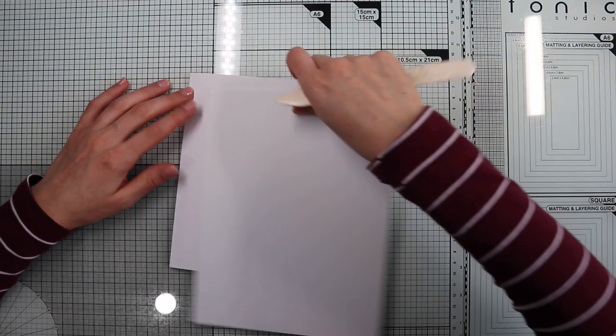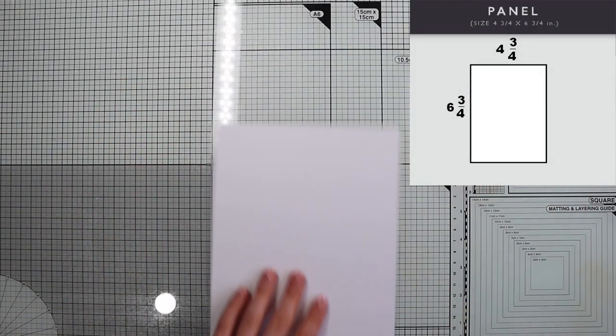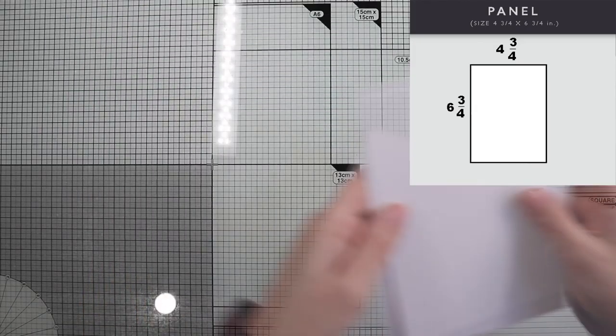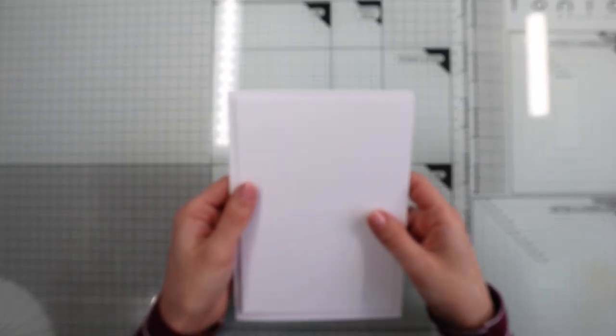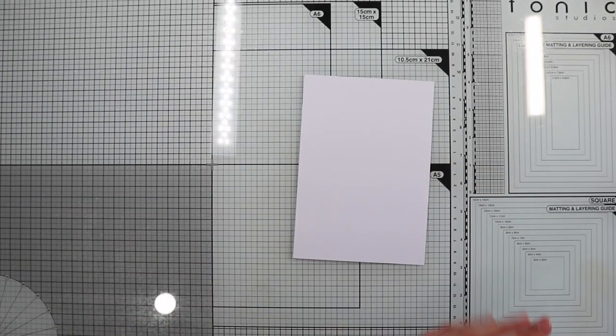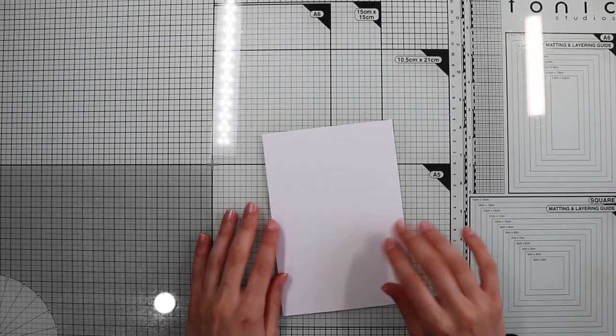Next, I'm gonna create the 4 and 3 quarter by 6 and 3 quarter background panel, again on white cardstock. As you can see, it is slightly smaller than the card base, so I will get some finishing edges, which I always like to have on my card.